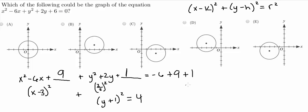So now I'm going to go ahead and rewrite that because it's not very nice. So we're going to have x minus 3 squared plus y plus 1 squared is equal to 4.